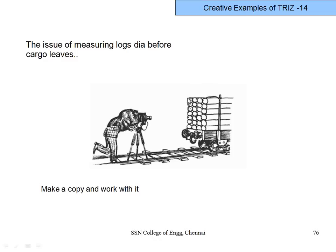Another example: logs of wood arriving by rail need their diameter measured, but the train cannot wait. The simple solution: make a copy — photograph the logs alongside a scale. At a later stage you can analyze the photograph. In modern terms we call this a prototype. So this summarizes 14 applied examples, all usable as thumb rules.